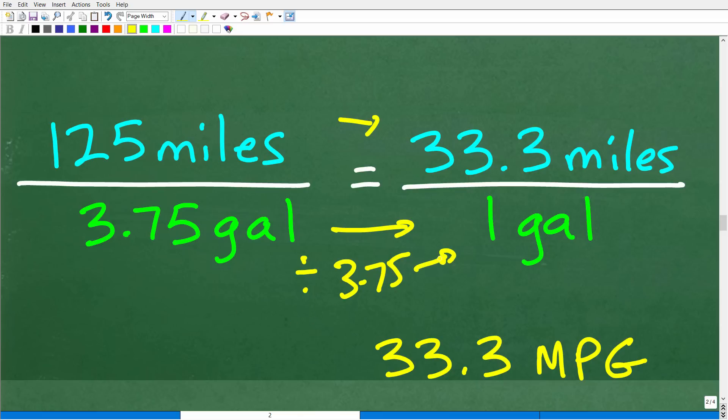So when we take 125 divided by 3.75, we end up with 33.3 miles. But effectively, what we're doing is taking both the numerator and denominator and we're dividing both by 3.75. So 3.75 divided by 3.75 is one. Okay. What we want is one gallon miles per gallon or miles per one gallon. Okay. That's what MPG stands for. So here we have 33.3. And this is a repeating decimal, by the way, but we'll just kind of round it off. 33.3 miles per one gallon. That is the MPG.